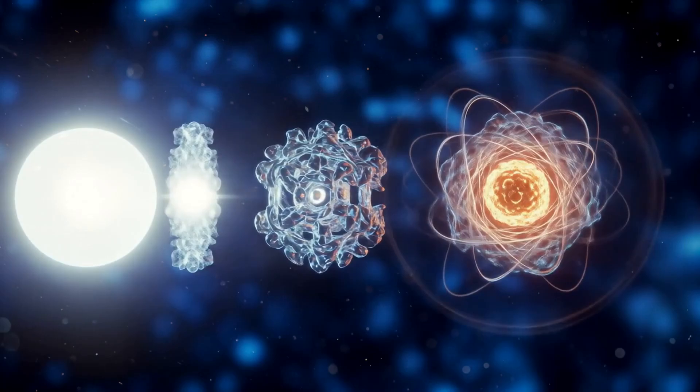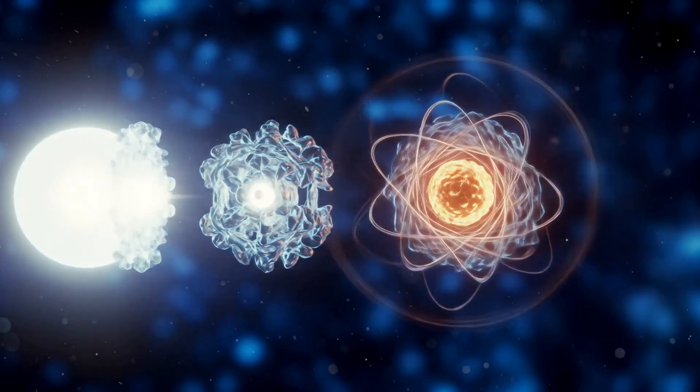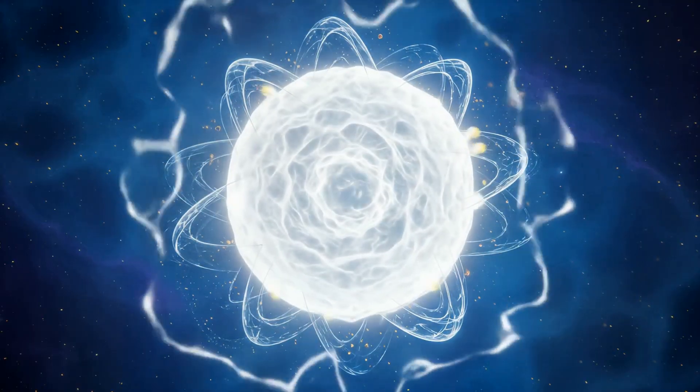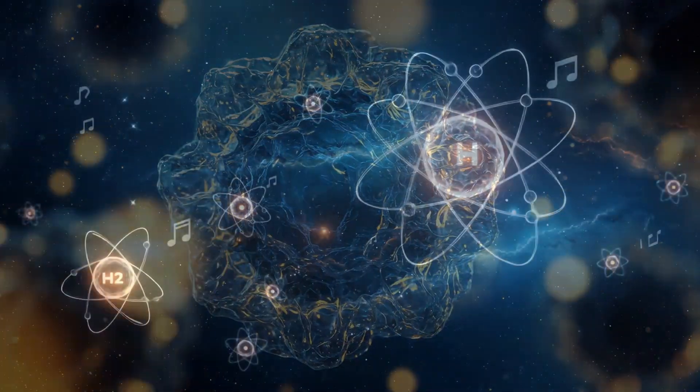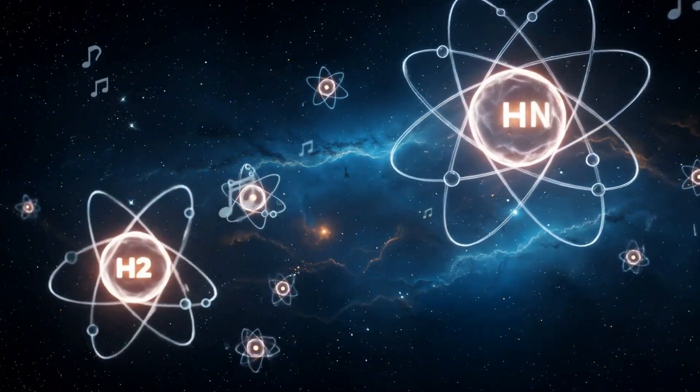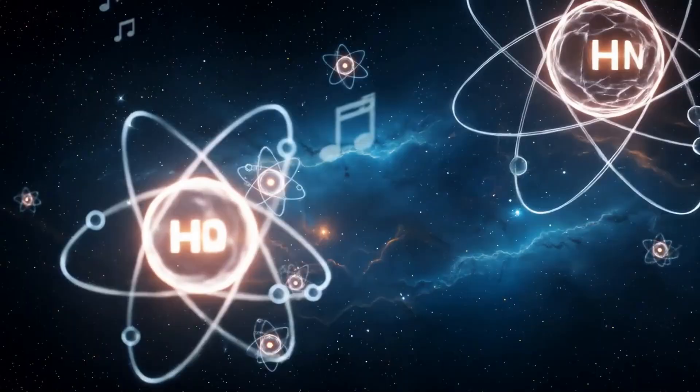But in QIH, this is how mass emerges. Mass equals angular frequency, because every particle is just a rhythm of light encoded on a qubit. Think of each atom as a spinning instrument. Hydrogen spins fast, heavier elements spin slower.